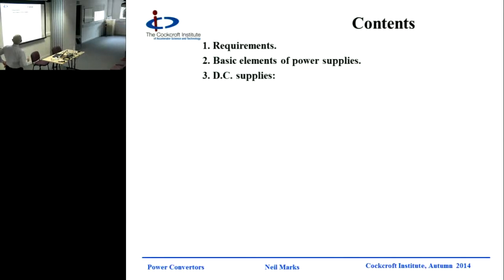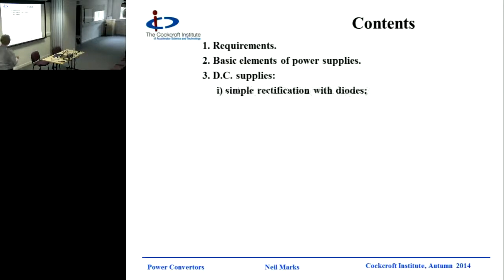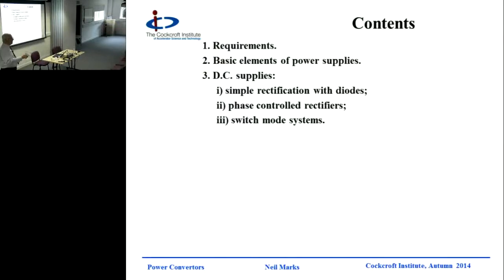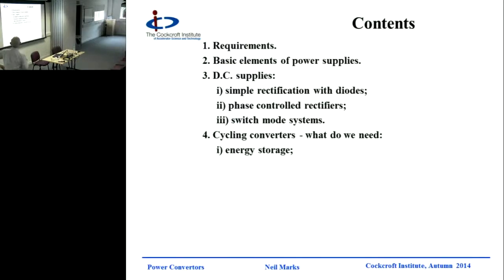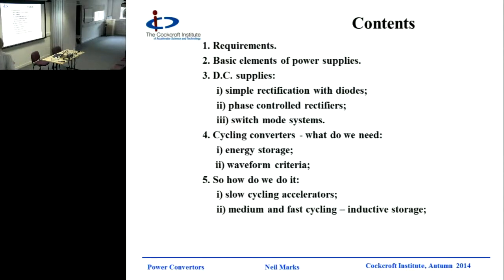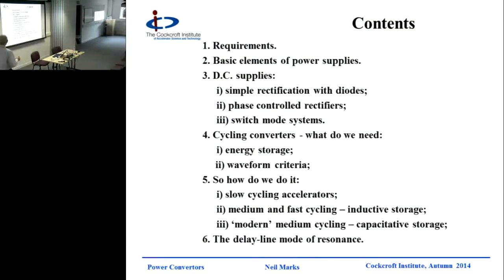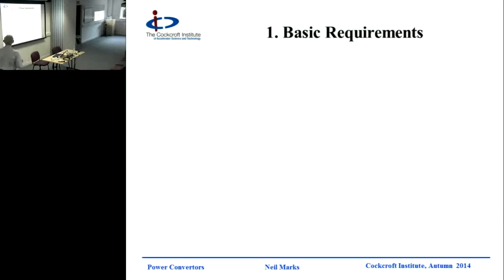So what are we going to be looking at? Great requirements, basic elements of power supplies. After we've gone through the basic elements of what goes into a power supply, we're going to be looking at DC supplies - simple rectification with diodes, phase control rectifiers, switch mode systems. Cycling converters: what do we need, energy storage, waveform criteria. How do we do it: slow cycling, medium cycling, fast cycling, modern medium cycling, capacitive storage. And finally, the great dragon that sits in the woods - the bogeyman of accelerators - the delay line mode of resonance, which you've never heard of before. I'd be darn glad that you've never heard of it. Shouldn't be there. If it is, it's disastrous.